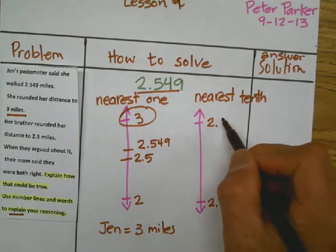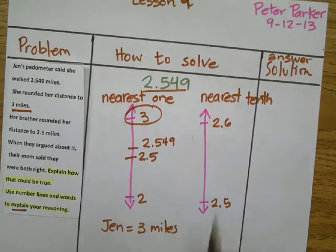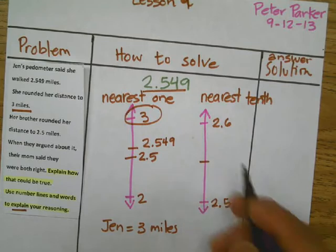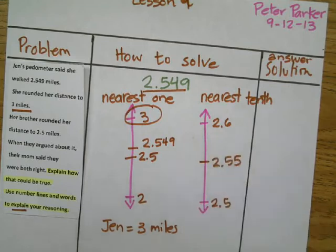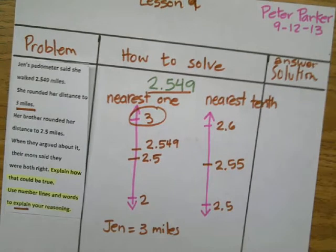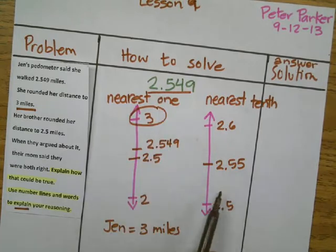So now, the midpoint will be 2.55. That will be halfway. Now, if we are able to bring this number to the nearest tenth, so that number will be written below the 2.55. Because, look, that's 2.54.